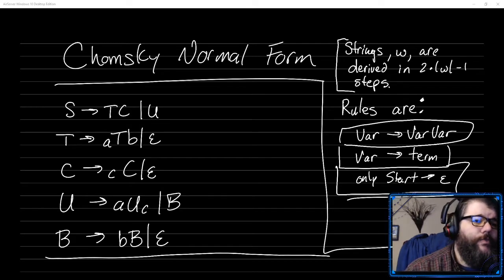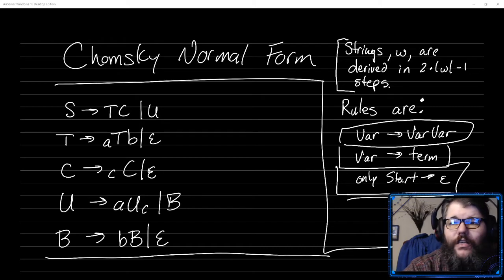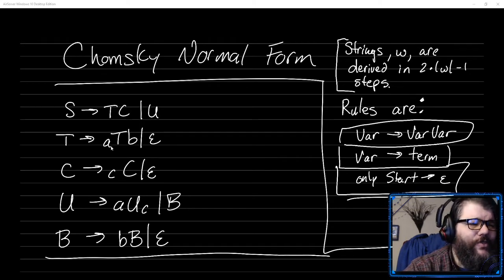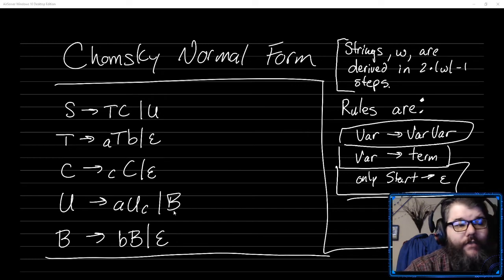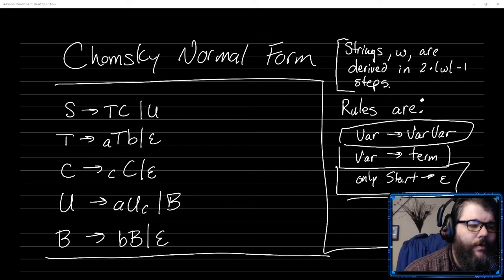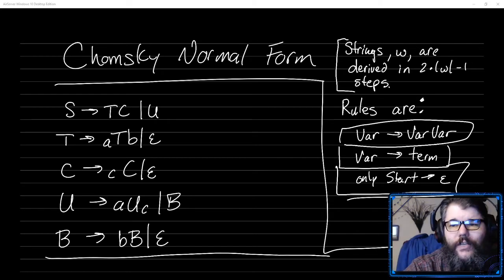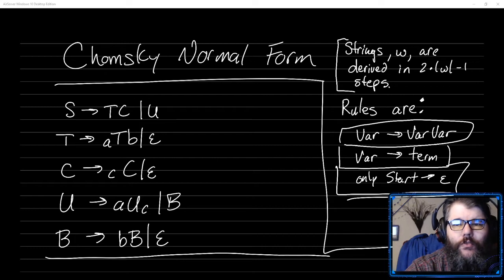So we're going to go through a series of processes in this particular grammar: getting rid of rules that have too many things, that have epsilons in the wrong places, that don't have enough things, and generate a new grammar that is the same language, but that does so in the Chomsky normal form sort of way.